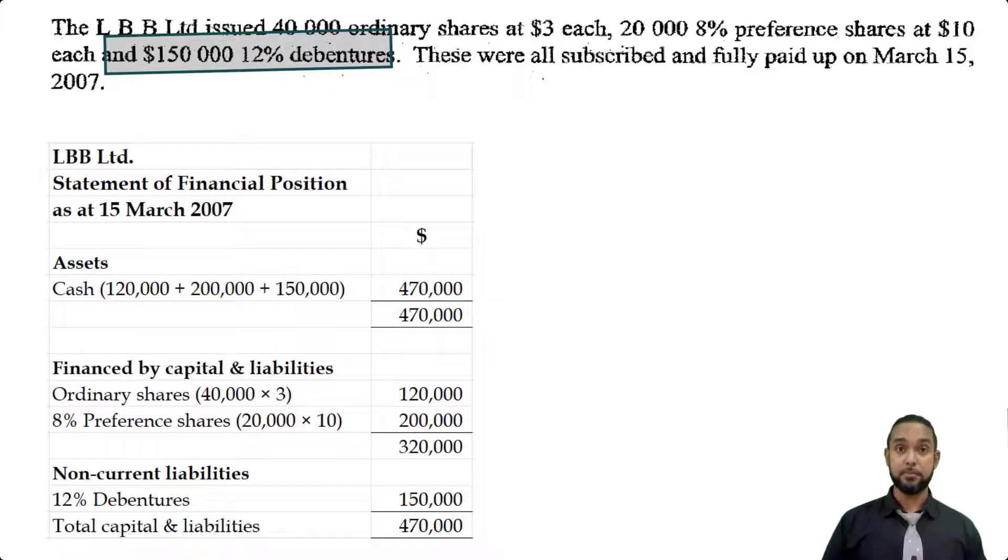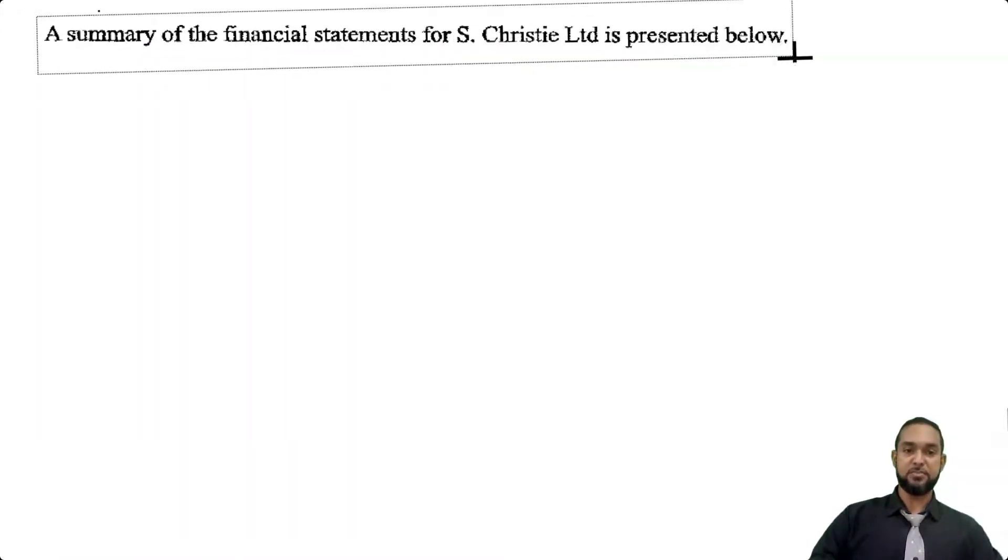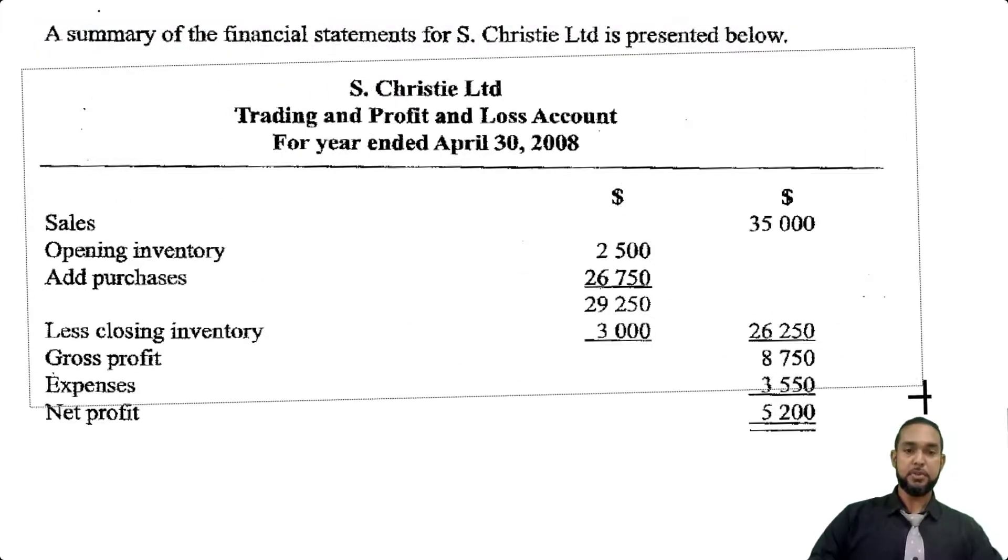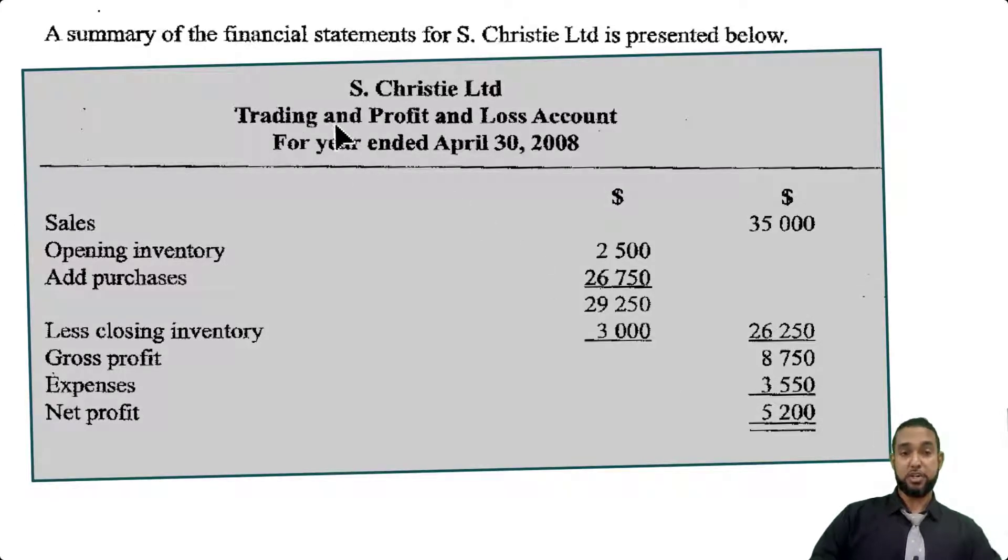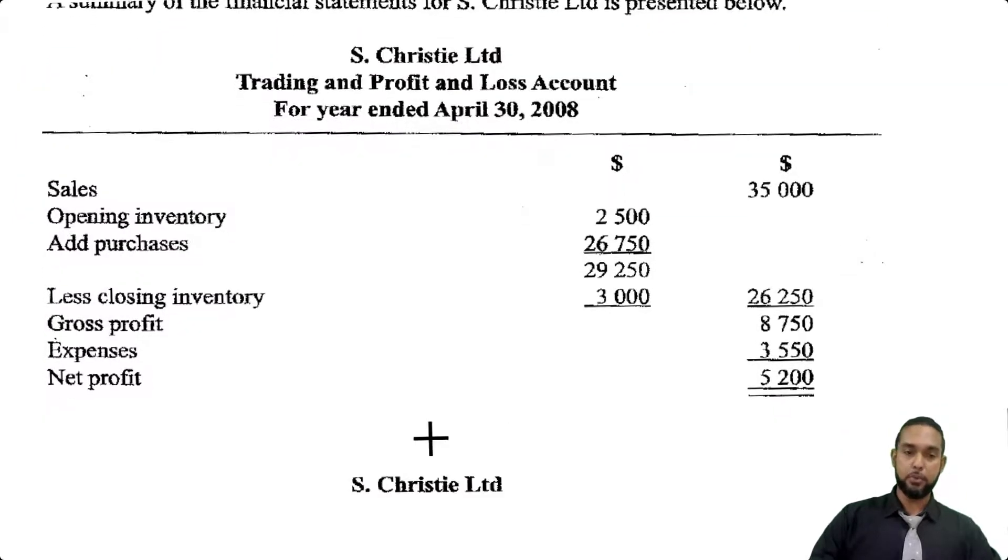For part B, they tell us a summary of the financial statements for S. Christie Limited is presented below. The first thing they give us is this income statement trading and profit and loss account for the year ended 30th April 2008. We have sales, opening inventory, add purchases, less closing inventory. So we have cost of goods sold. When you subtract that from sales you get your gross profit. You have your expenses and your net profit.